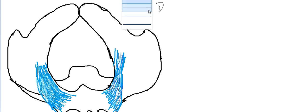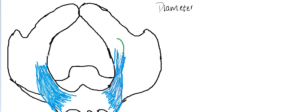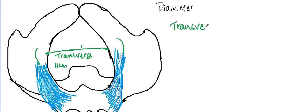There are mainly two diameters: transverse diameter and anteroposterior diameter. The transverse diameter is the diameter between the two ischial spines, and it measures 11 centimeters.